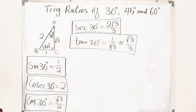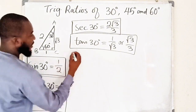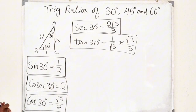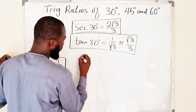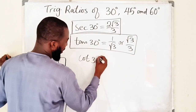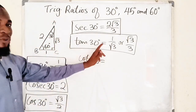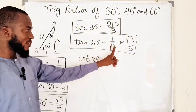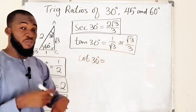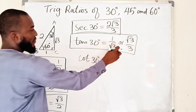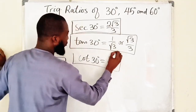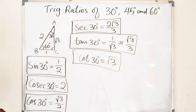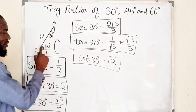We are done with those. We have one left — the reciprocal of tangent of 30 degrees, which is cotangent of 30 degrees. Just flip the tangent value upside down. Instead of root three over three, flip one over root three to get root three divided by one, which is root three. So these are the six trigonometric ratios of 30 degrees.